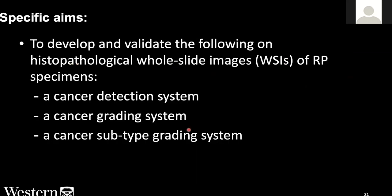I break down our objective into three specific aims: including cancer detection, which is finding the cancer on the RP section; the second step would be grading the cancerous regions based on the Gleason grading system; and the third would further grade the cancerous region beyond the Gleason grading system into subtypes.